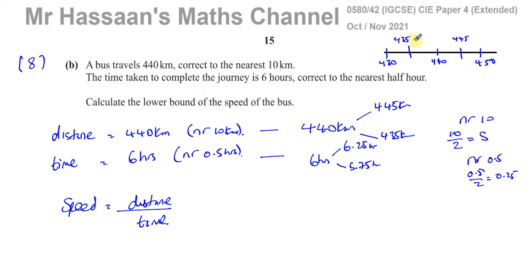It could have included 435 but it wouldn't include 445. When we talk about upper and lower bounds, we mention and include the upper bound value. The upper bound means everything just before 445, because if you round 445 to the nearest 10 it gives 450 due to the 5. So the upper bound represents everything just below 445 — for example, 444.9999. So 445 is the upper bound and 435 is the lower bound.